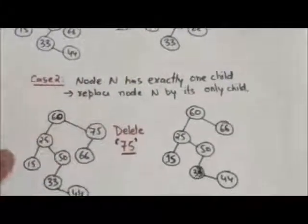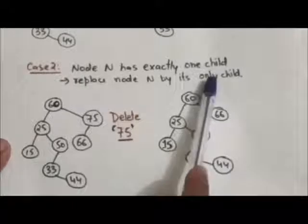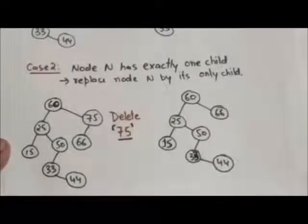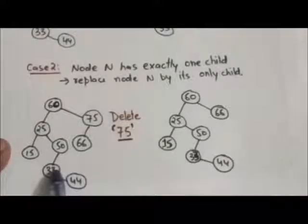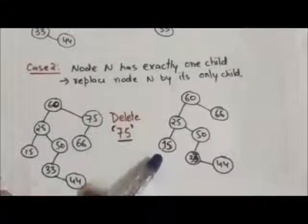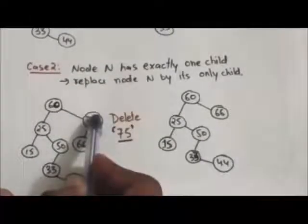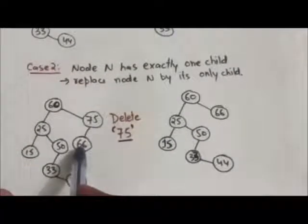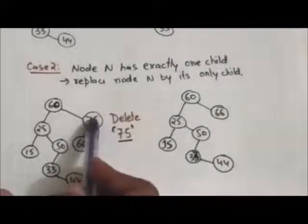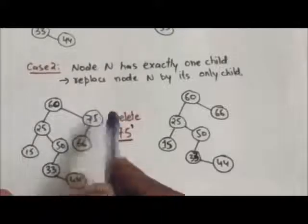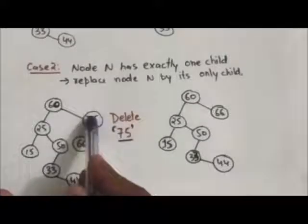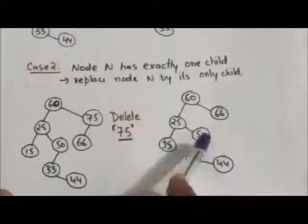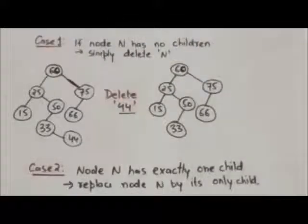Second case: if node N has exactly one child, then node N is deleted by simply replacing it with its only child. For example, to delete the node with value 75, which has only one child with value 66, we replace node 75 with node 66. After deleting node 75, we get the resulting binary search tree.